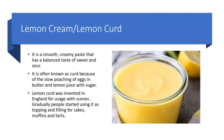Next we are going to discuss about lemon cream, which is also very commonly called lemon curd. Lemon curd is a smooth creamy paste that has a balanced taste of sweet and sour. It is often known as curd because of the slow poaching of eggs in butter and lemon juice with sugar. Lemon curd was invented in England to use with scones instead of jam; however, people liked it so much that they started using it as a topping and filling for cakes, muffins and tarts.